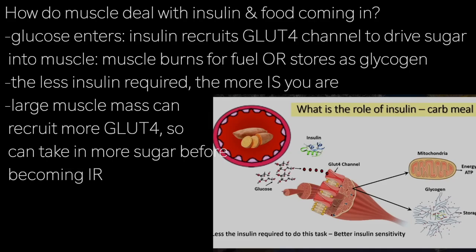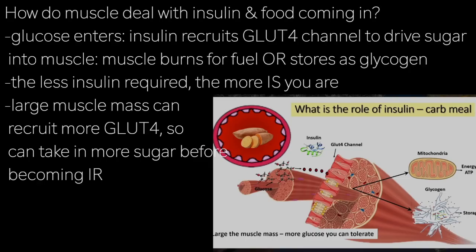Let's examine how muscles deal with insulin and food coming in. As glucose is coming in, insulin recruits a channel called the GLUT4 channel to drive the sugar into the muscles. The muscles can either burn it for fuel or store it as glycogen. The less insulin required to do this job, the more insulin sensitive you are. If you have a larger muscle mass, you can recruit a lot more GLUT4 channels and take in a lot more glucose before getting insulin resistant.